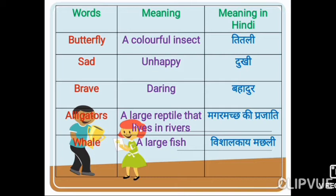Last: whale — W-H-A-L-E, whale. English meaning: a large fish — L-A-R-G-E, large; F-I-S-H, fish. A large fish. Matlab vishal — meaning very large fish.